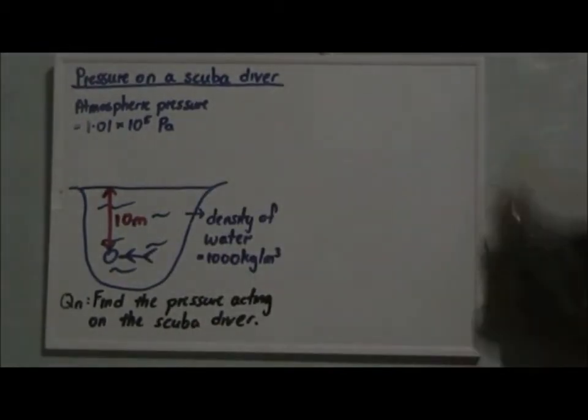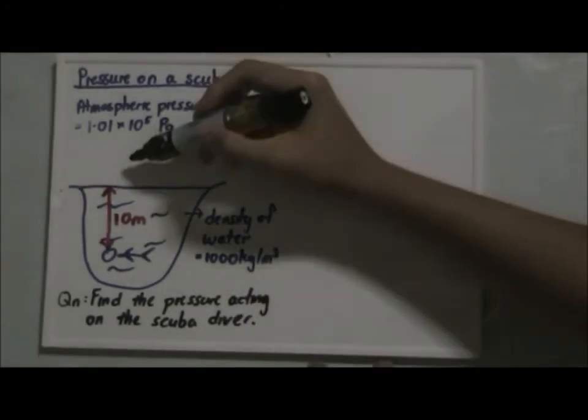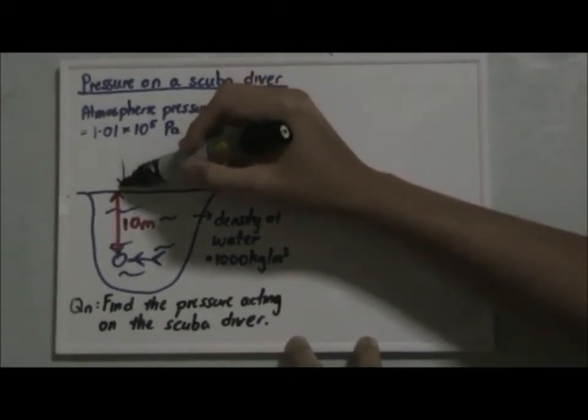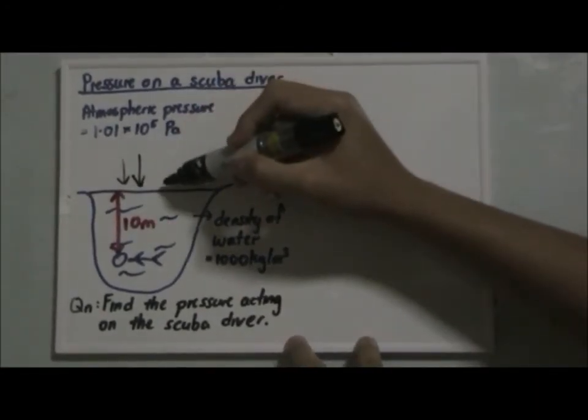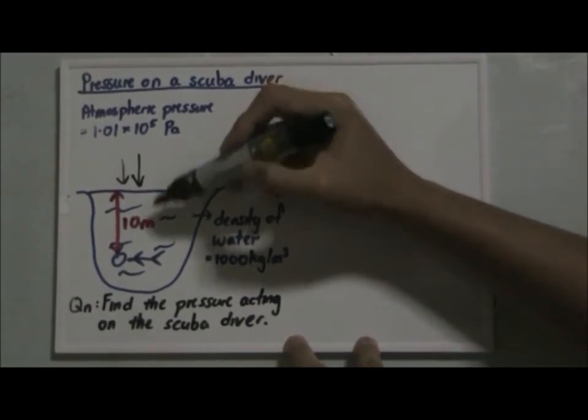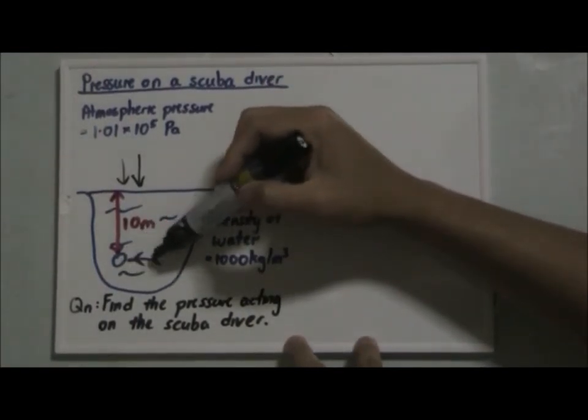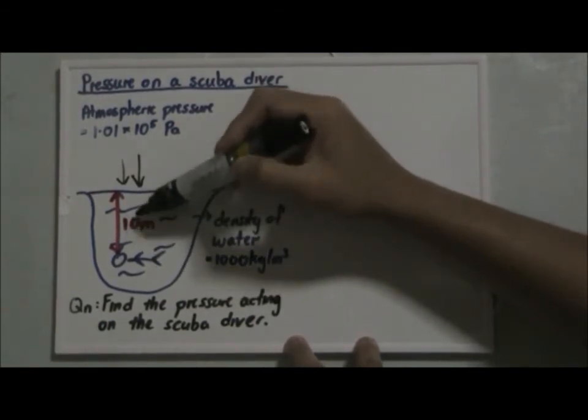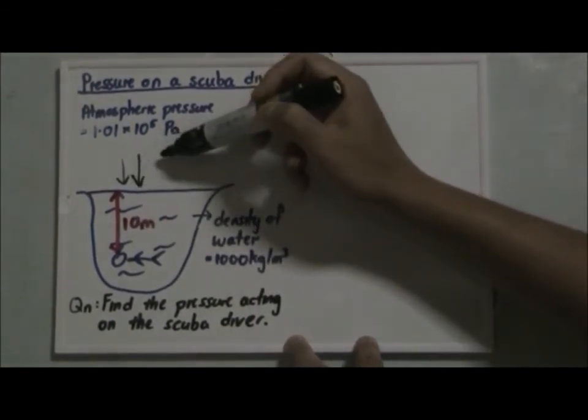And the atmospheric pressure is pressing down on the water surface. So basically, the scuba diver is subjected to the pressure of this 10 meter of liquid column plus the atmospheric pressure.